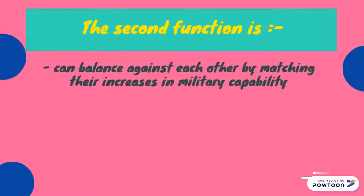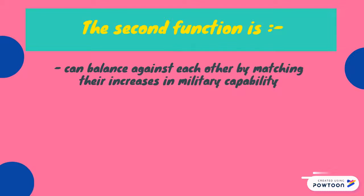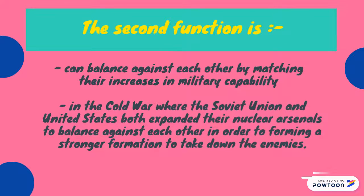The second function is where two states can balance against each other by matching their increases in military capability. For example, in the Cold War, the Soviet Union and the United States both expanded their nuclear arsenal to balance against each other in order to form a stronger position to counter the opposing side.